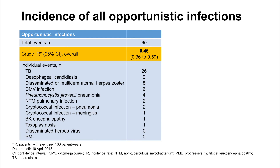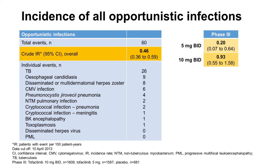Overall, we identified 60 opportunistic infections, giving a crude incidence rate of 0.46 per 100 patient years. All events occurred in tofacitinib-treated patients. Furthermore, in Phase III studies, the crude incidence rate of opportunistic infections with tofacitinib 5 and 10 mg twice daily were 0.2 and 0.93, respectively. Although the rate was higher in patients on the 10 mg twice daily dosage, the difference between these dosages was not statistically significant.